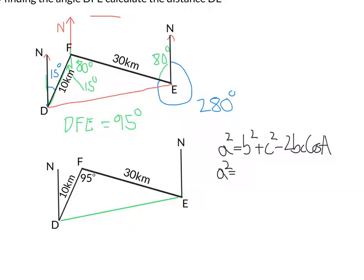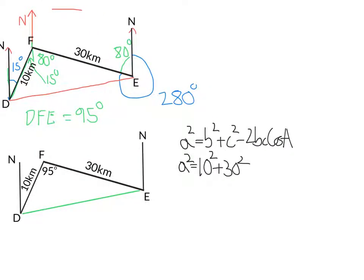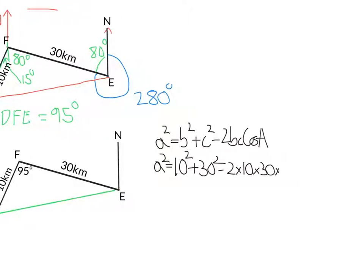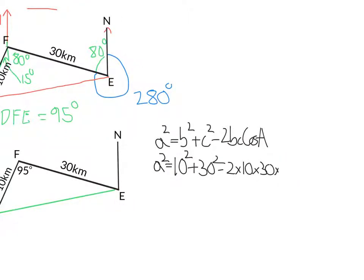Let's sub in the values we know. So we have got 10 squared plus 30 squared. Let's give myself a little bit more room here. Then take away 2 times 10 times 30 times cos of the angle, 95.